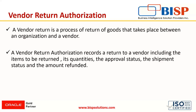Vendor return authorization records a return to a vendor, which includes the items to be returned, their quantities, the approval status, the shipment status, and the amount that is to be refunded.